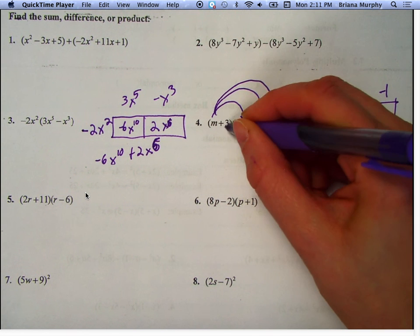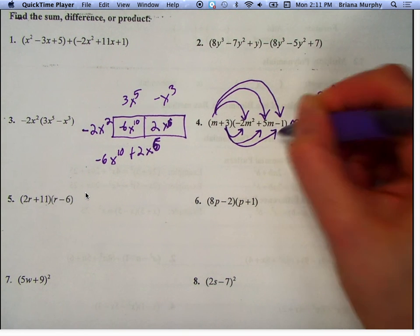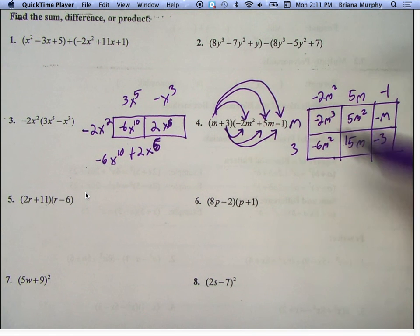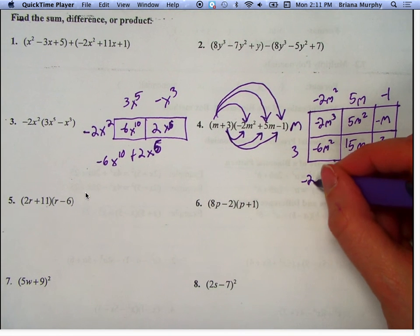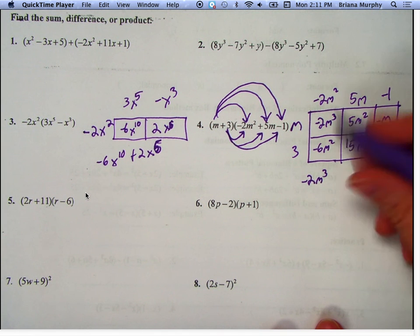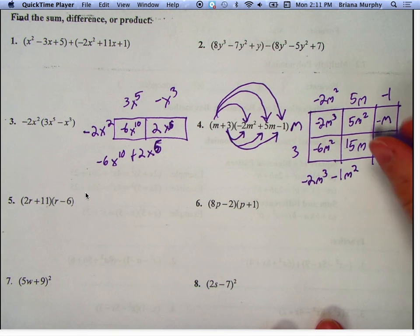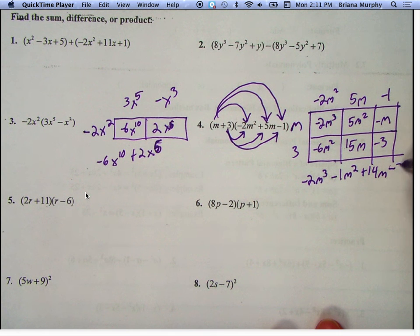And then you just add the loose like. The like terms, yeah. They have the same exponents and the same letters. So there's only one that has to the 3rd, right? So I put that one down first. There's 2 that are squared, so I put them together. So I get -1m². There's 2 that have an m, so I get 14m. And then I've got a -3 at the end.